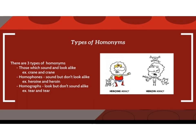The second one is homophones. A homophone is a word that is pronounced the same as another word but differs in meaning and is spelled differently. For example, heroin and heroine. The third one is homographs — homographs are words with the same spelling but having more than one meaning. Example: tear and tear.